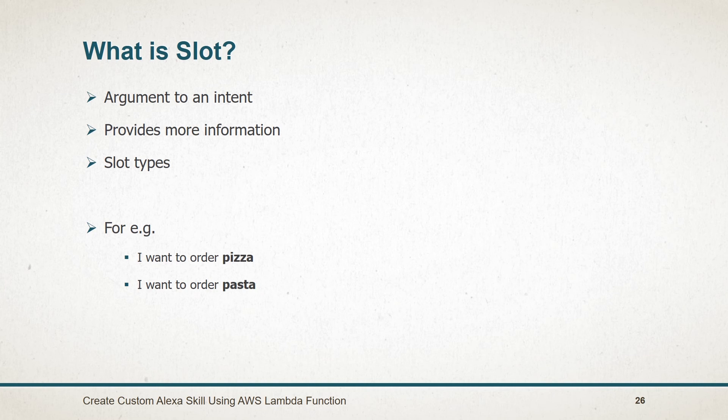In real-world usage, the user may order any other product such as a burger. Alexa skills have some predefined slot types available, and we can also create our own custom slot type.